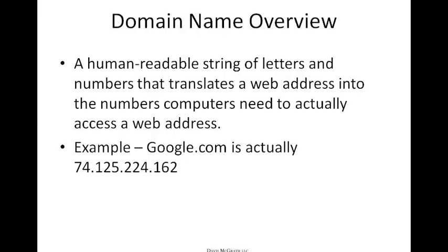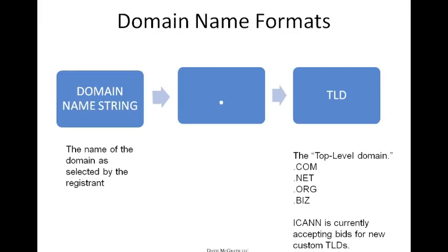Just because somebody has registered a domain name doesn't necessarily mean they're not using it — it could be used for email or some other service. When talking about domain name formats, you start at the far right and work your way to the left. What you see on the far right is the top-level domain, the TLD, which is usually .com, .net, .org, .biz, and many others. There are even country code domains, such as .us for the United States.